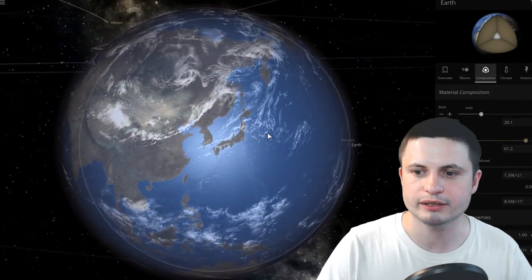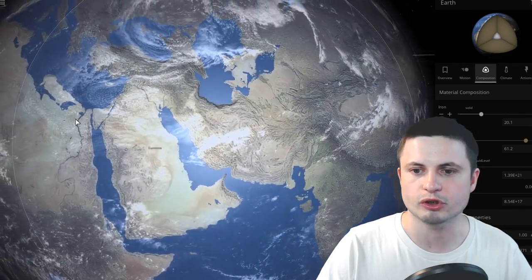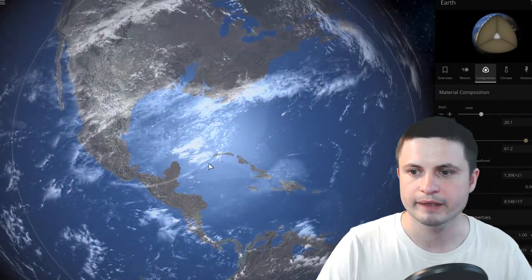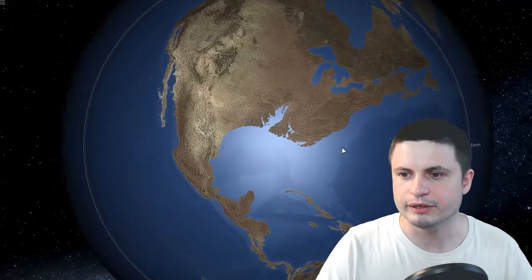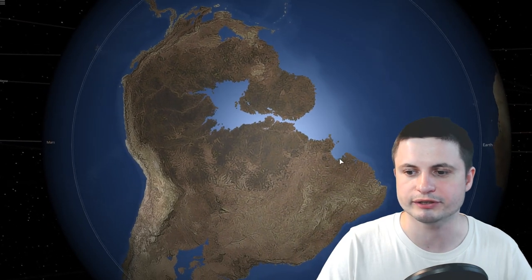And as soon as you do that, it should start looking similar to what we saw previously. So let's actually take a look at North America first. And here you can see that Florida is gone. There is that sea that we had previously. And South America looks just like we saw it in the National Geographic simulation.